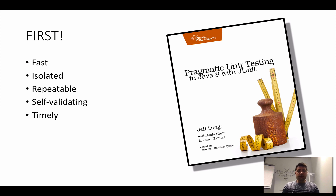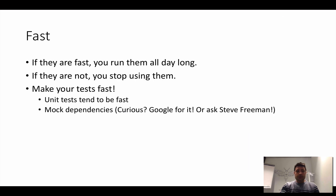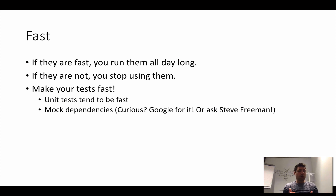Then we discussed some best practices in writing tests — the FIRST principles from this book. The first F stands for Fast: our automated tests have to be fast because if they are fast we can run them all day long. I program a little bit, run tests, and one second later I get feedback and I know if everything is working. But if our tests are very slow — like 30 minutes or two hours to run — I'm not going to run them all the time and I won't have feedback, which is something we don't want.